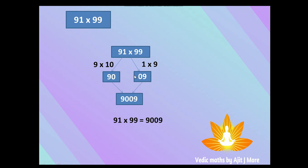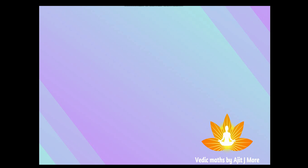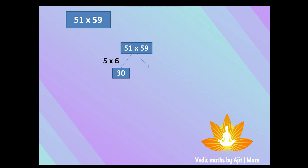Combine both parts and 9009 is your answer — that simple! Many more such tricks are coming in the next sessions, so keep watching and don't forget to comment and share with your friends. One more example for practice: 51 × 59. What is the first part? What comes before the unit place? That is 5. What comes after 5? That is 6. So 5 × 6 = 30 — first part is 30. The second part is 1 × 9 = 9; don't forget to put a 0 before it, making it 09. Combine and you get 3009.